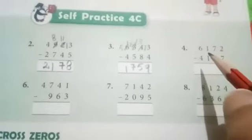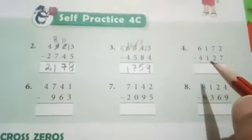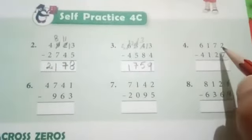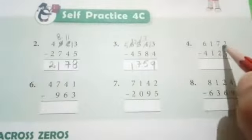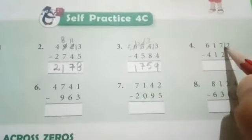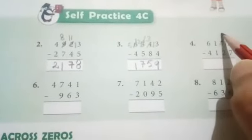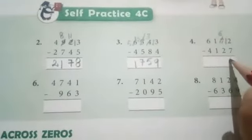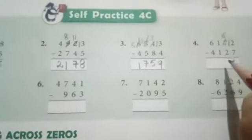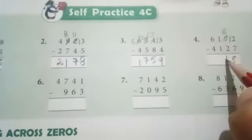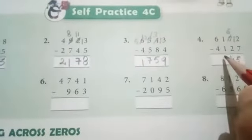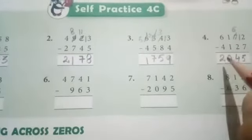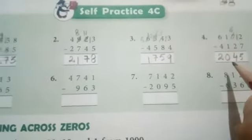In the fourth question, our question is 6172 minus 4127. Since 2 is smaller than 7, we take one borrow — it becomes 12, and 7 minus 1 here becomes 6. Now 12 minus 7 is 5, so we write 5 here. 6 minus 2 is 4, so we write 4 here. 1 minus 1 is 0, so we write 0 here. 6 minus 4 is 2, so we write 2 here. So we got the answer 2045.